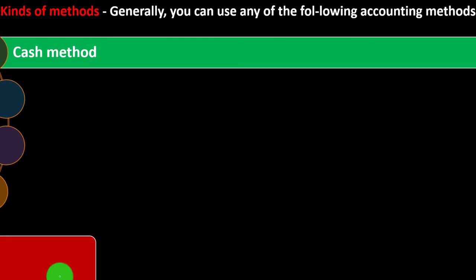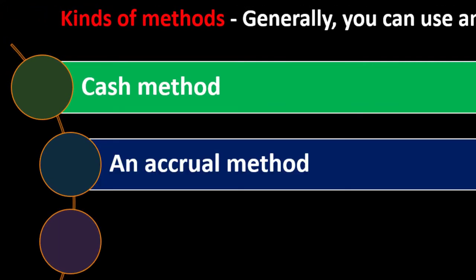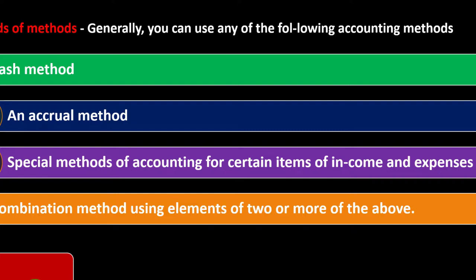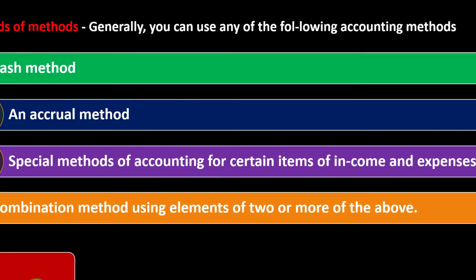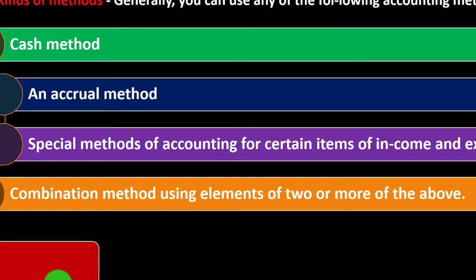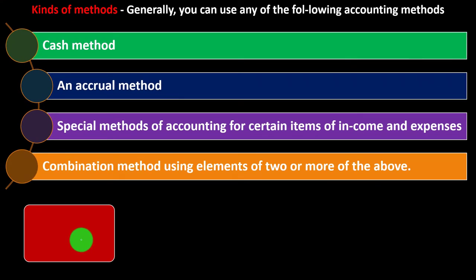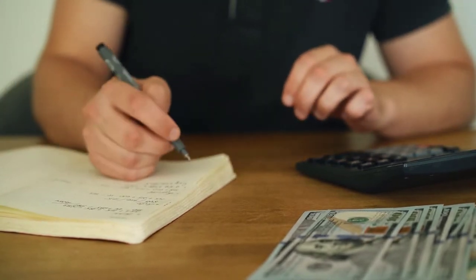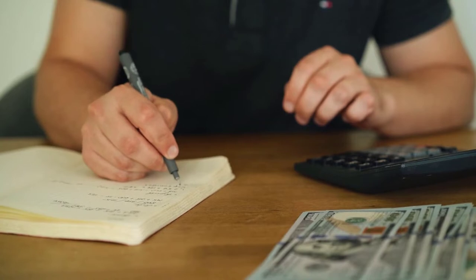Kinds of methods: generally you can use the cash method, the accrual method, special methods of accounting for certain items of income and expense — such as for long-term contracts, completed contract method, or percentage of completion — and combined methods using elements of two or more methods. Most people think of cash and accrual as completely distinct, but most people are actually doing some kind of hybrid between the two.